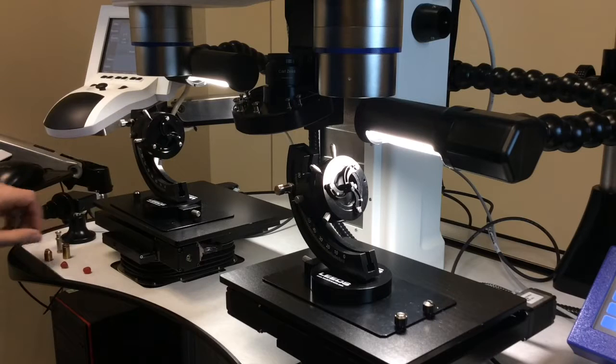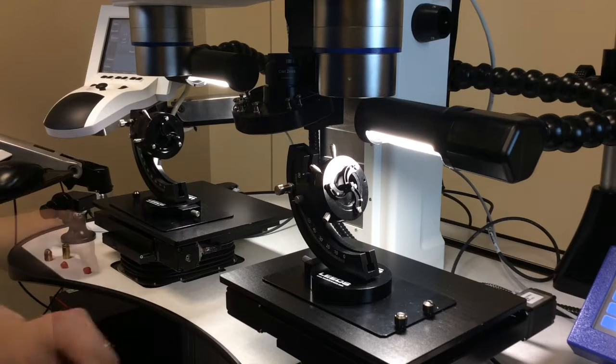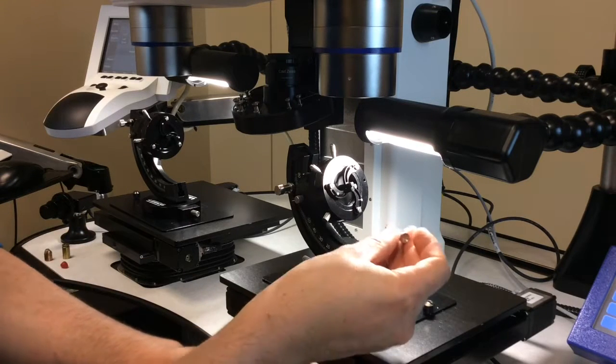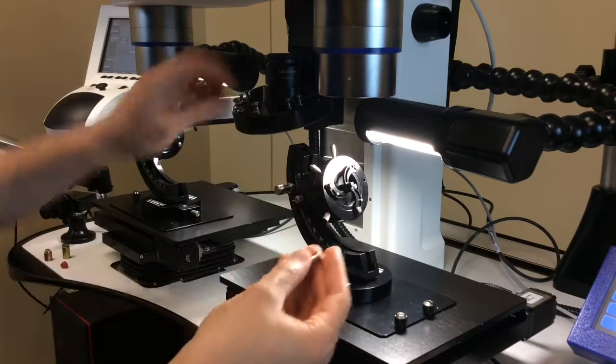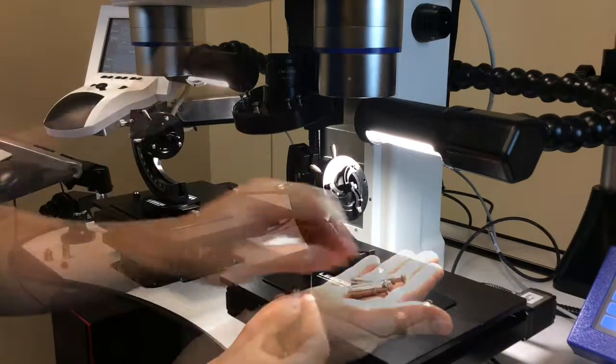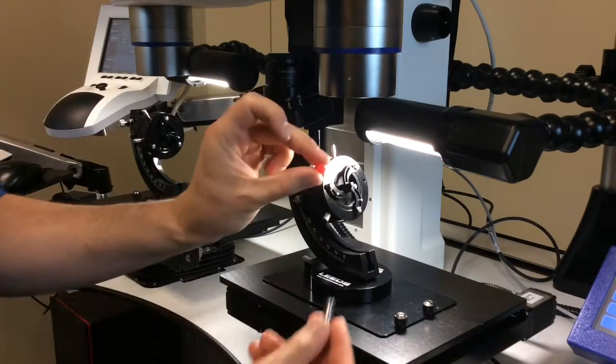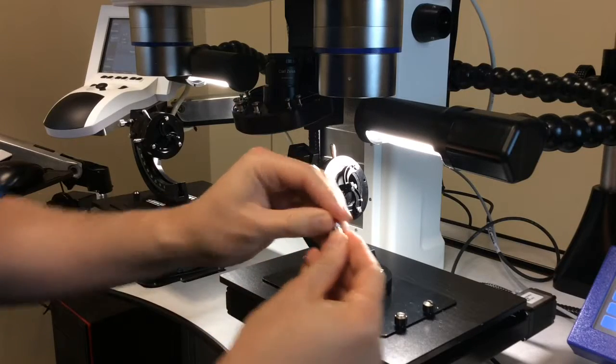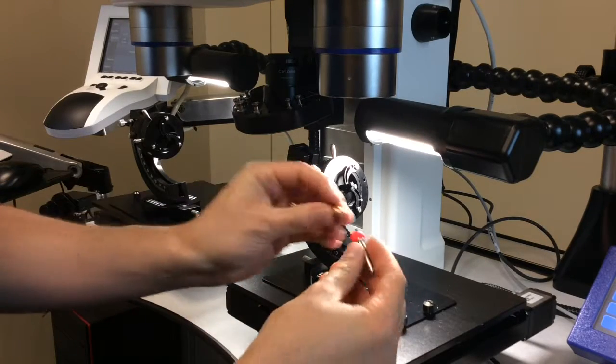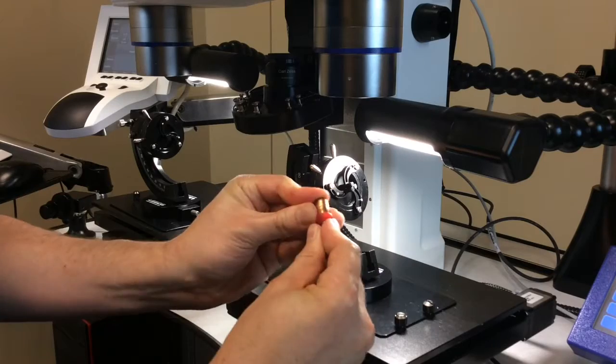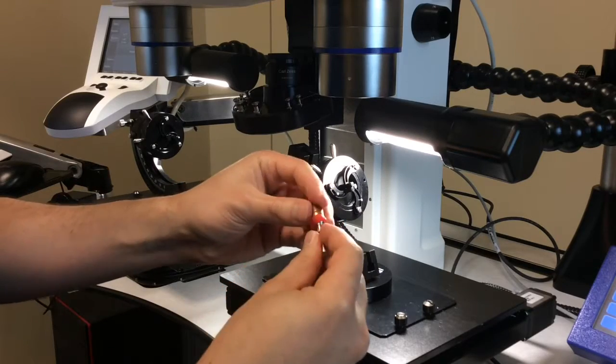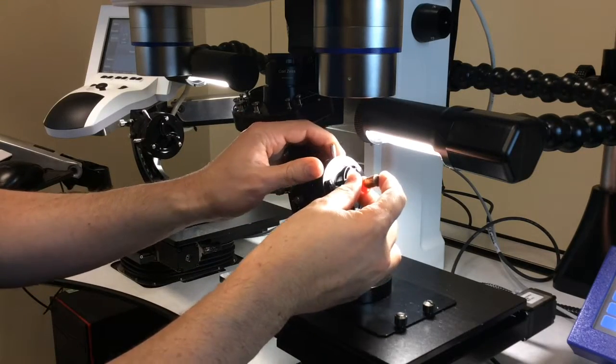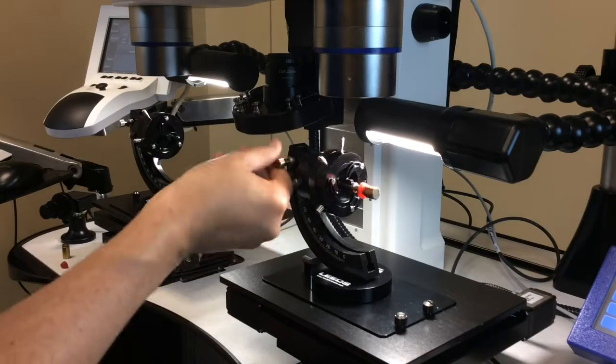Our universal holder also has the ability to hold bullets. So we use a series of pin mounts, which are roughly caliber matched and come with the system. The way this works is I take a ball of wax, put it on the pin mount, and then I can take a bullet and just push that all the way into the pin mount. The wax will spread out, and then I can insert the whole pin mount into the universal holder.